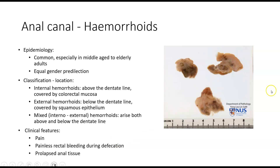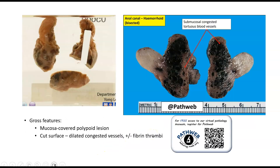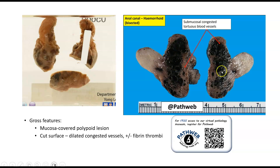There can also be prolapse of this tissue through the anus. Grossly, we have this mucosa-covered polypoid lesion with very prominent dilated, congested blood-filled vessels in the underlying stroma, and sometimes with paler fibrin thrombi.